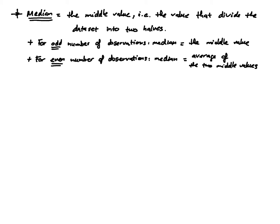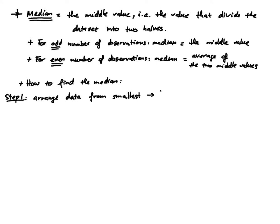So how do you find the median? To find the median, you want to follow two steps. First, you want to arrange your data from smallest to largest — in other words, you want to arrange your data in ascending order.